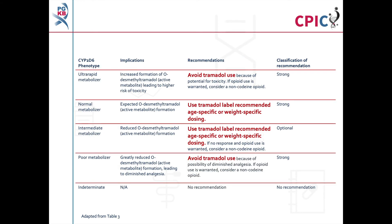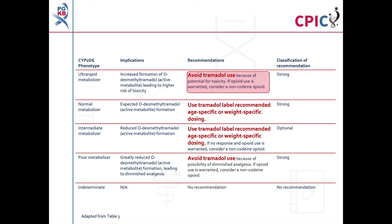These are the CPIC dosing recommendations for tramadol as shown in Table 3 of the guideline. Patients with a CYP2D6 ultra-rapid metabolizer phenotype will have increased formation of O-desmethyltramadol following administration of tramadol, which increases the risk of toxicity. Tramadol should be avoided in these patients. If opioid use is warranted, consider using a non-codeine opioid. This is a strong recommendation.